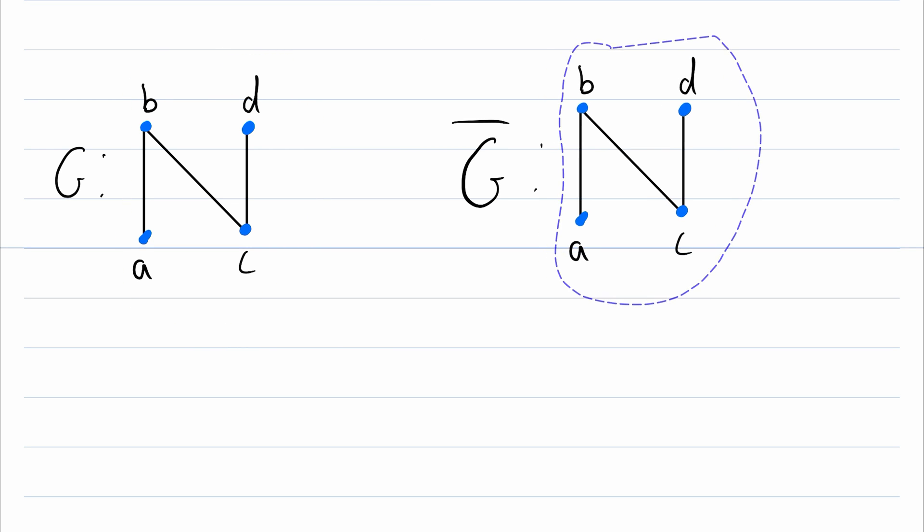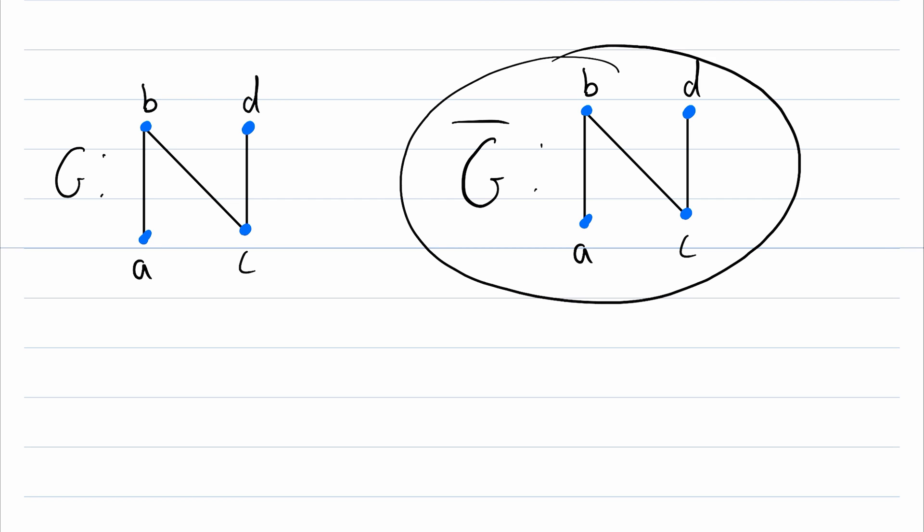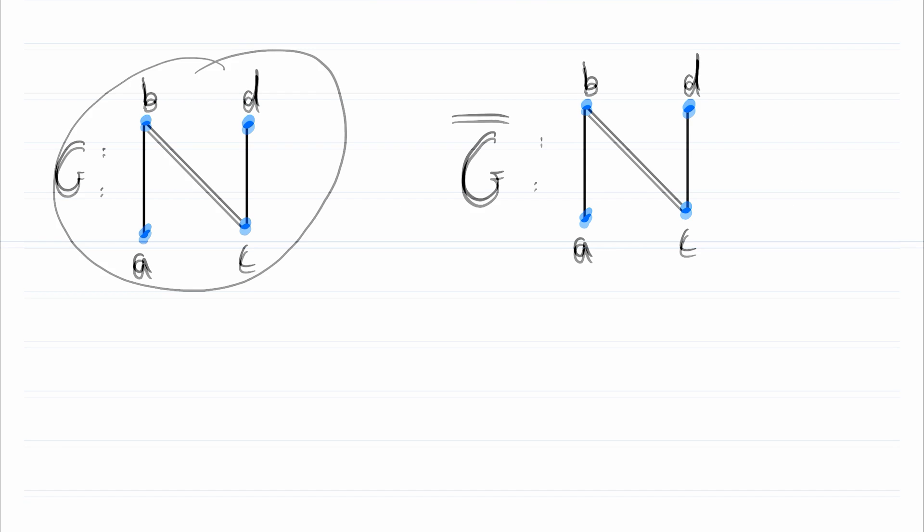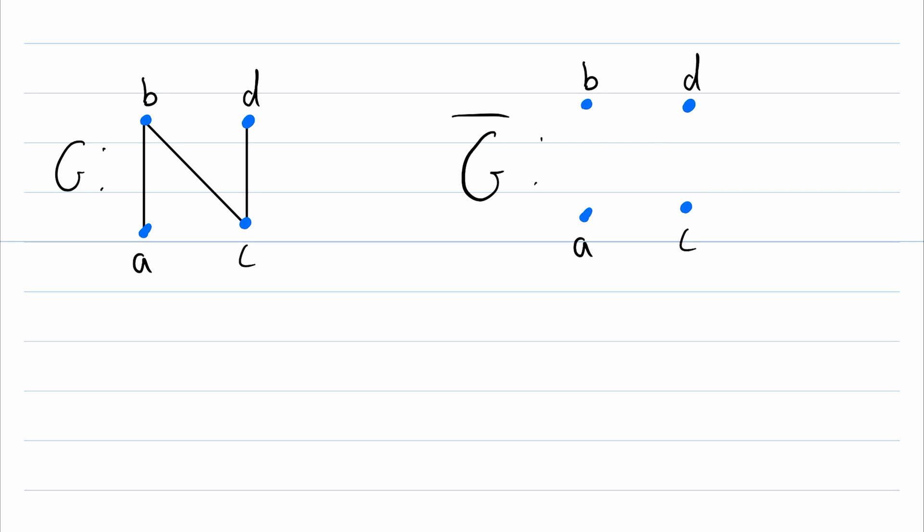so we'll begin again with copy and paste. Then two vertices in the complement can only be adjacent if they were not adjacent in the original. So all of those original edges have got to go away. Then B and D are not adjacent in G, so they will be adjacent in G complement. A and D are not adjacent in G, so A and D are adjacent in G complement, and A and C will be adjacent in G complement.